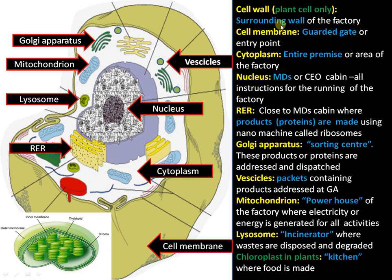To summarize: the cell wall in a plant cell is like a surrounding outer boundary wall; the cell membrane is like a guarded gate where guards check and allow certain members to pass through; cytoplasm is the entire area of the factory; and the nucleus is the MD's or chief executive officer's office — the decision-making center. RER is the site where products or proteins are made and further modified.